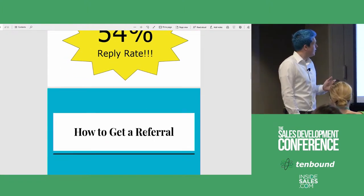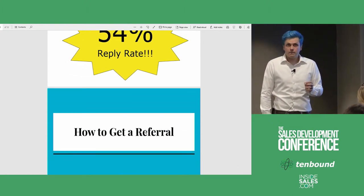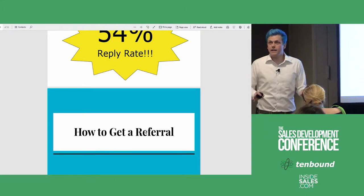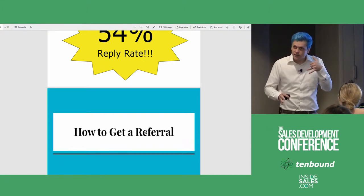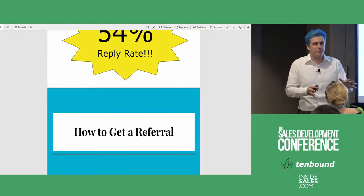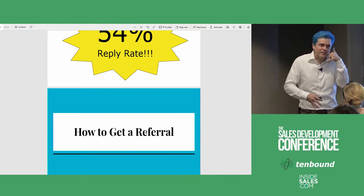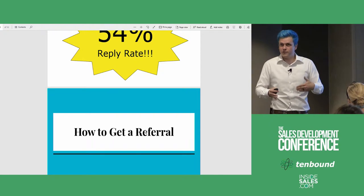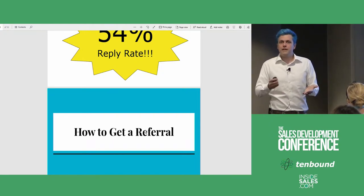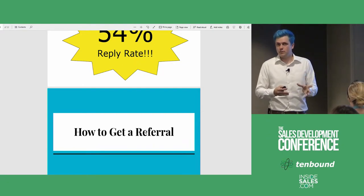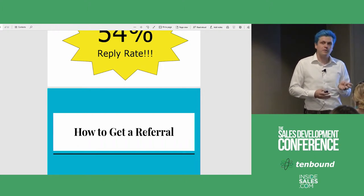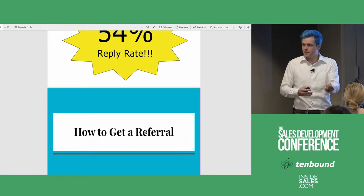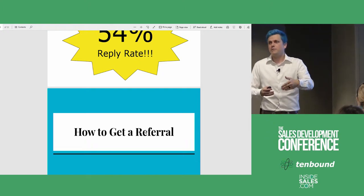54% is the reply rate we get on the sequence. The way this sequence works is I reach out to the wrong person, realize they are in fact the wrong person, and I say: 'Who should I be reaching out to?' — then I pause awkwardly until they respond. That's how you get it. A lot of people have really complex ways of asking — you just need to keep it simple and ask who the person is. Assume that they want to give it to you. Hopefully you've articulated your value well. They give you that person's name, you put them into a referral sequence, and we get a 54% response rate — with firsthand validation that this is the right person.